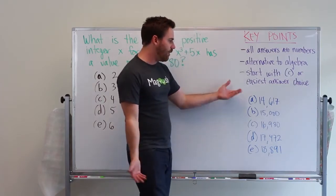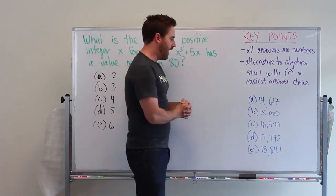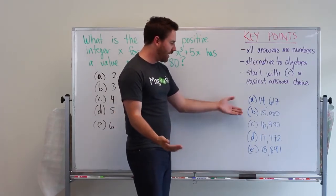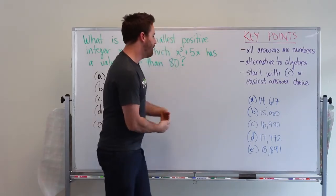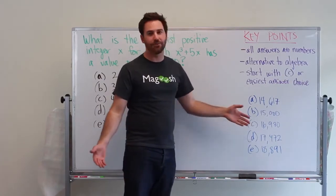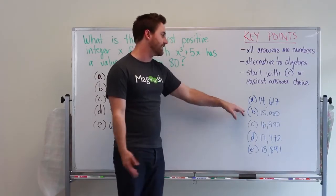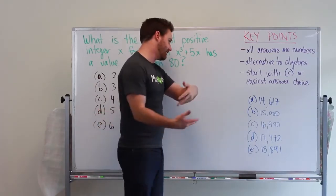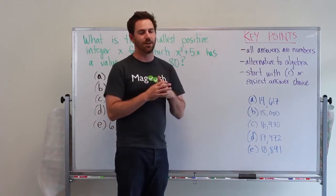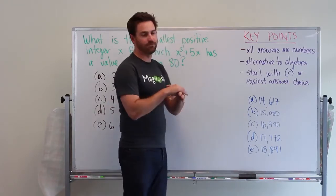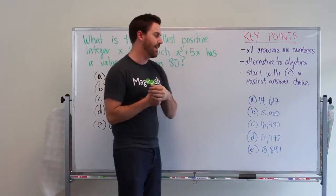you can see one, they're all really close together so I can't estimate. And two, having to deal with these tough numbers is going to be hard. But I can see B is a round number, it's 15,000, that's very easy to deal with. So in this case I would start with B because all these other answer choices are going to take me a lot more time.